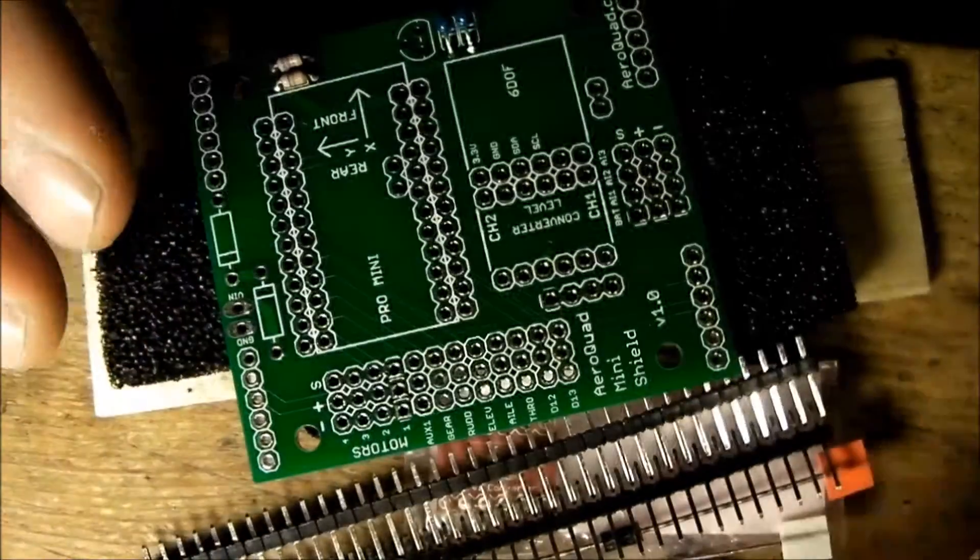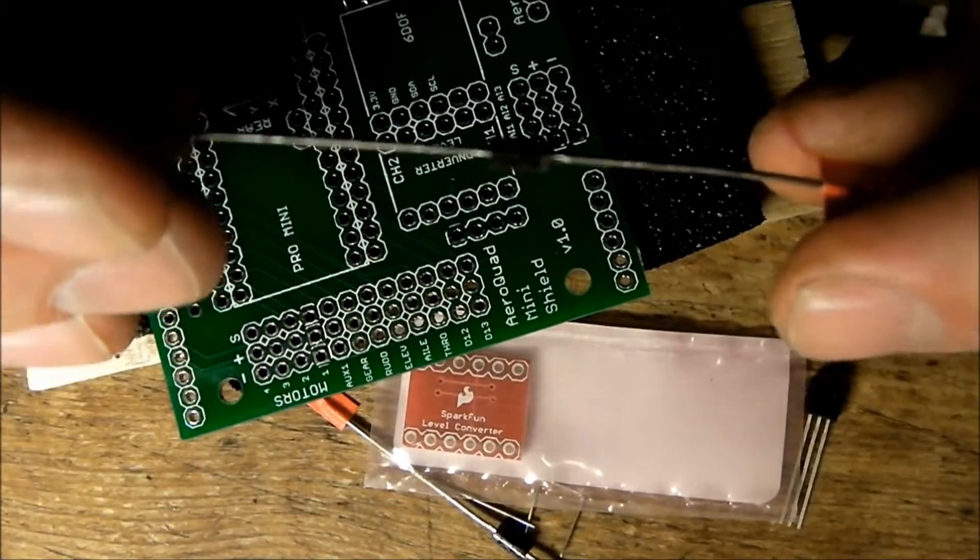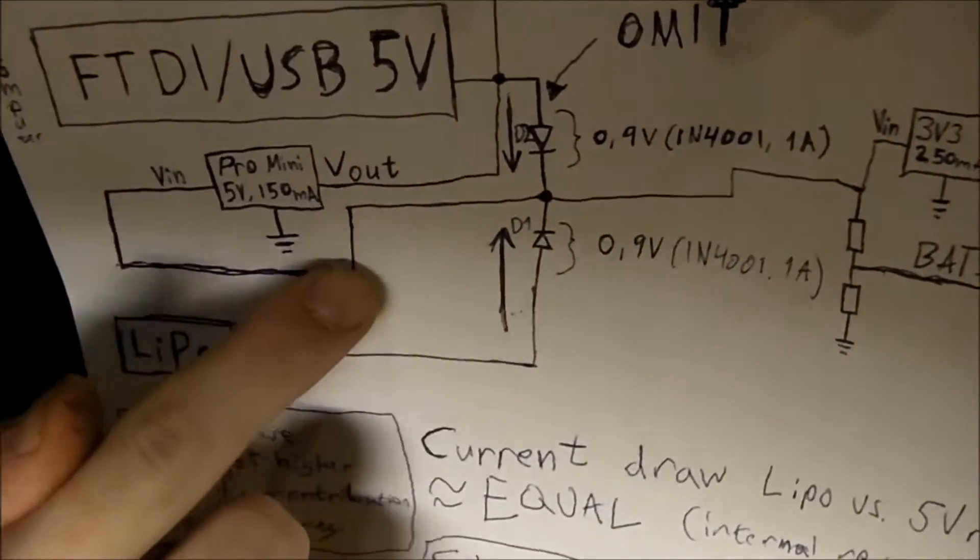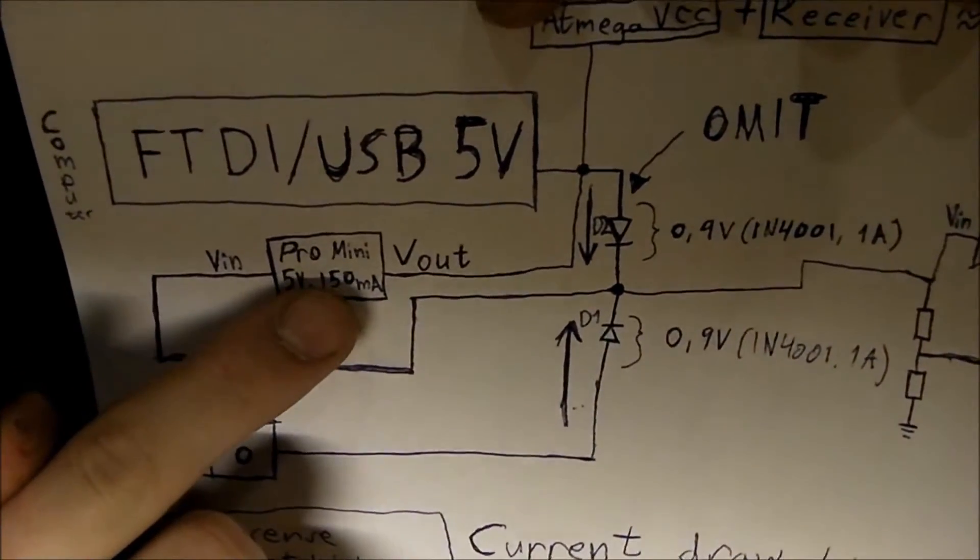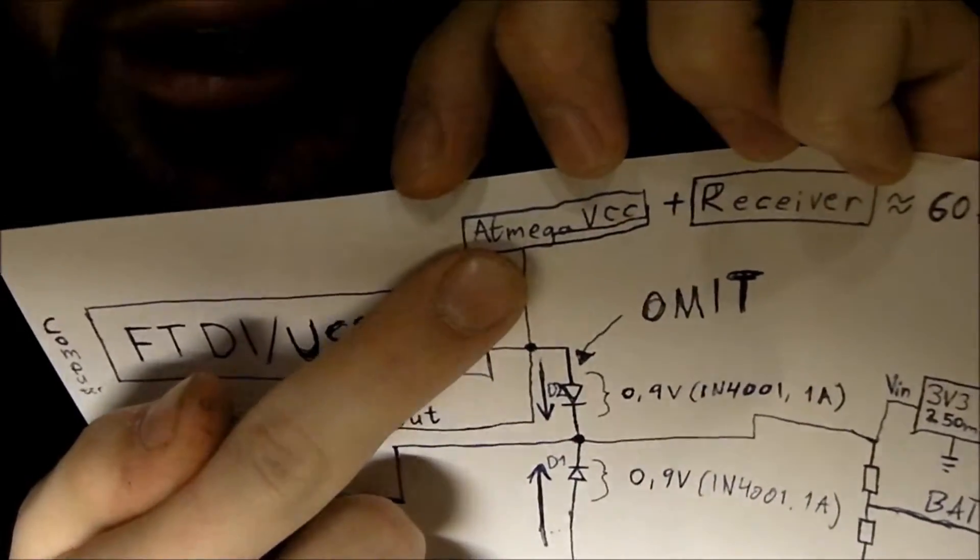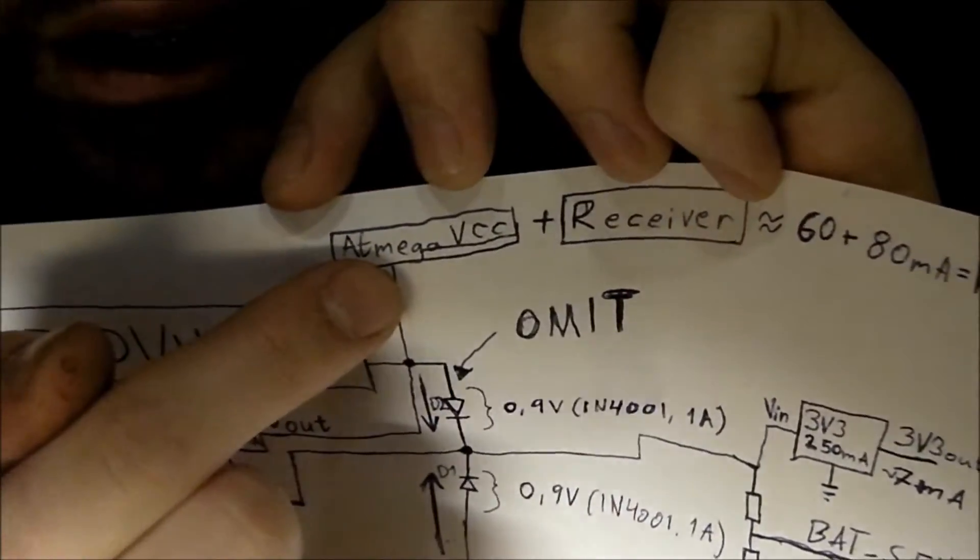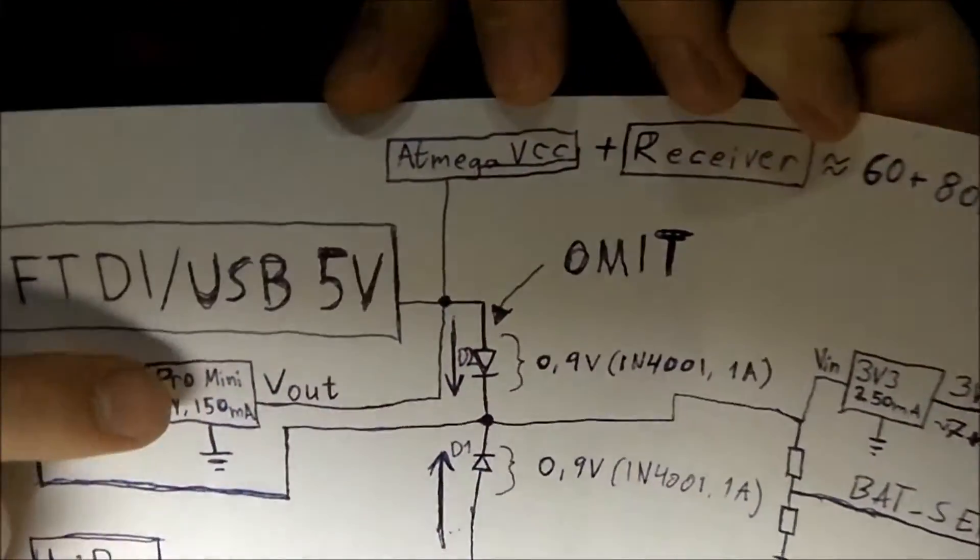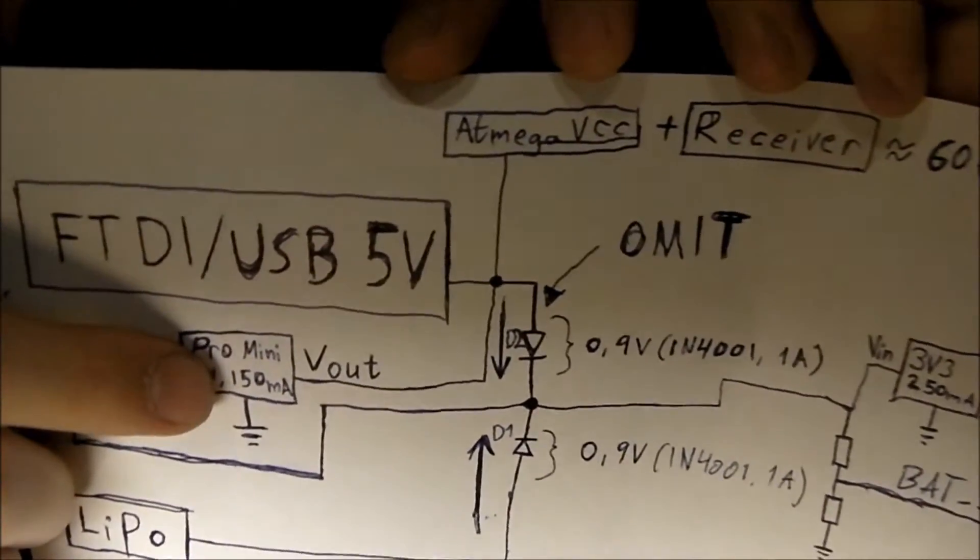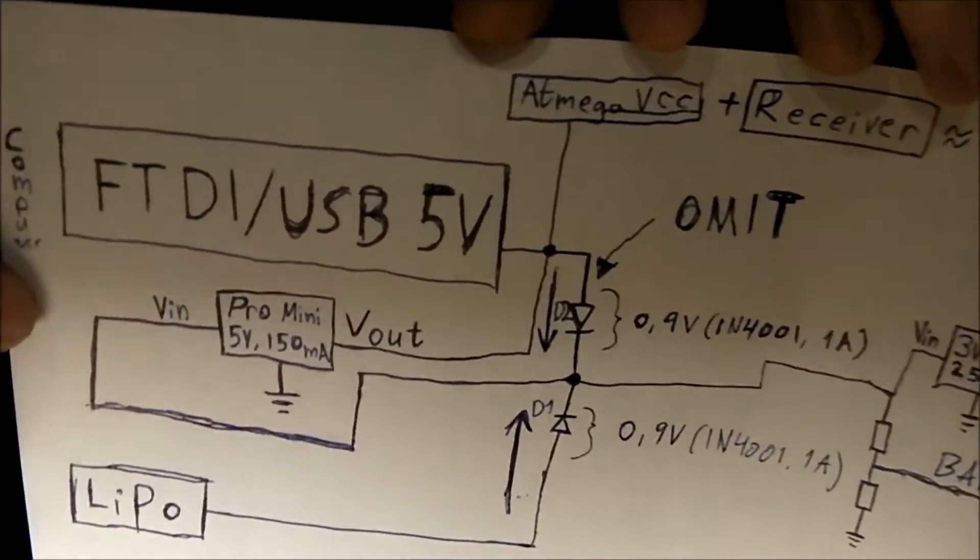We got these headers and these 1N4001 diodes. The LiPo comes in here through this diode and powers the 5V regulator of the Pro Mini, which is 150mA. Which is in turn providing 150mA to the Atmega 328 and the receiver. My receiver is 80mA plus 60mA approximately for the Atmega 328, which is 140mA. So it's kind of on the edge of what this regulator can handle. I have noticed that it turns off if you try to pull too many amps of it, but it shouldn't be a problem. Just so you know, 150mA for this.